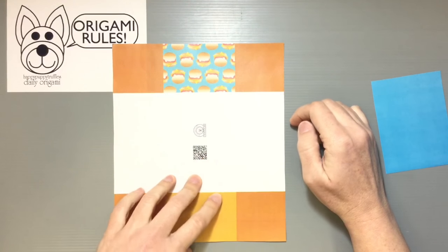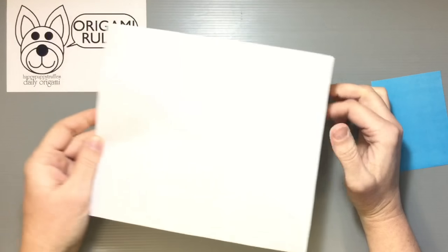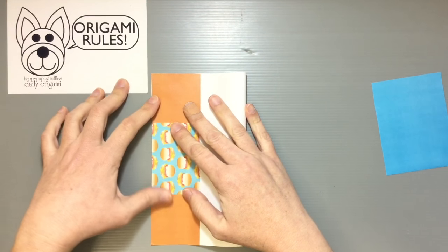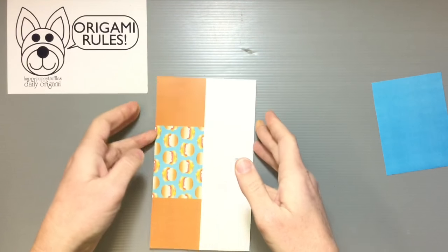Once you've cut this out, what we want to do is starting with the color side facing down, I'm just going to fold my paper in half. Open it up.